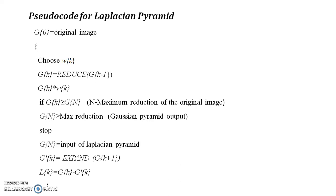If the k-level decomposition is 4, then 2^4 equals 16 directional subbands are obtained from the Directional Filter Bank structure. The combination of the Laplacian Pyramid and the Directional Filter Bank is known as the Contourlet Filter Bank structure, and high-frequency contents are captured using this Directional Filter Bank.